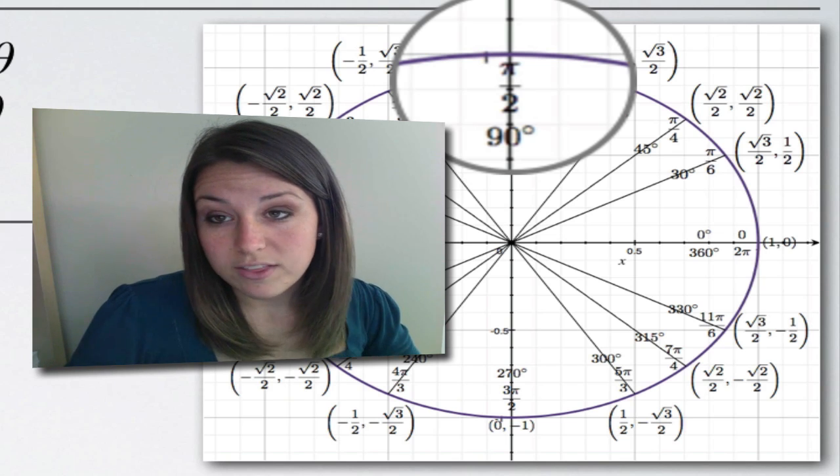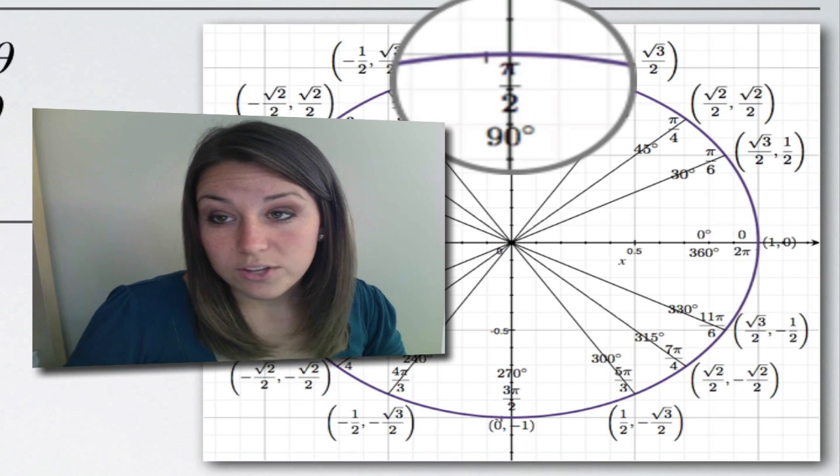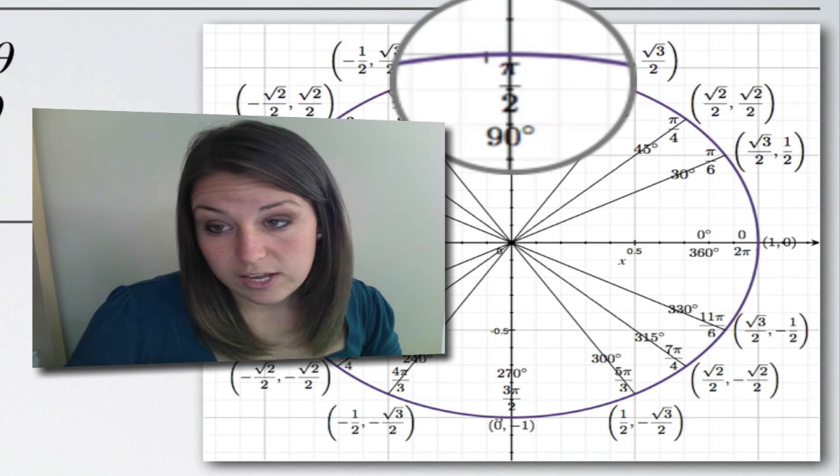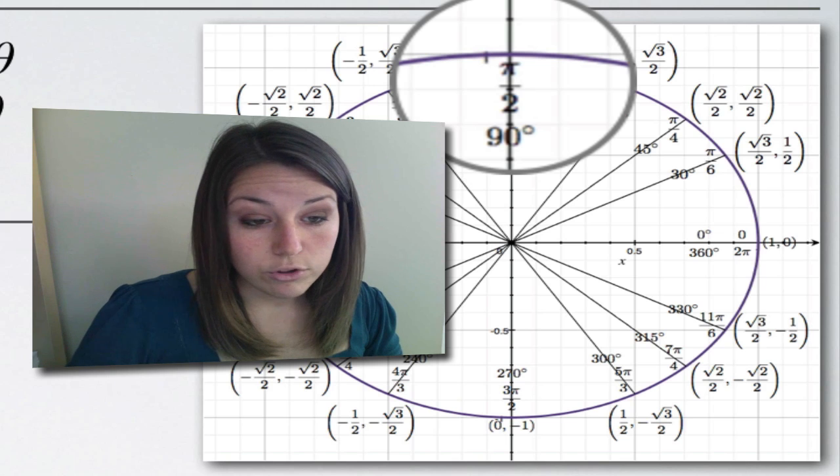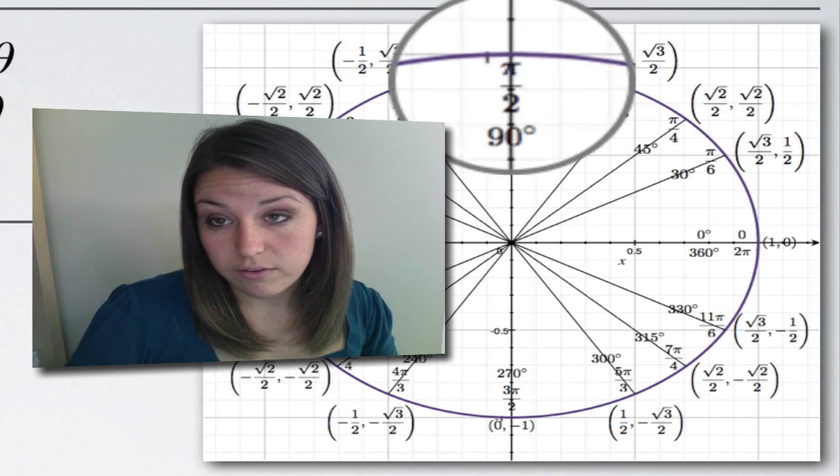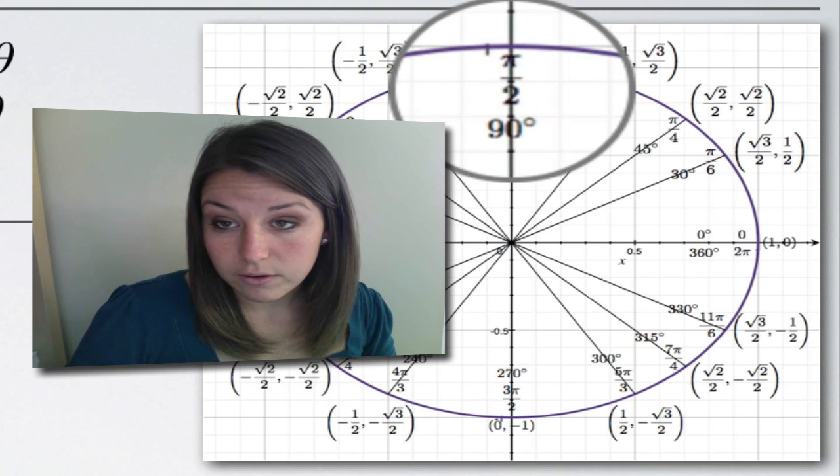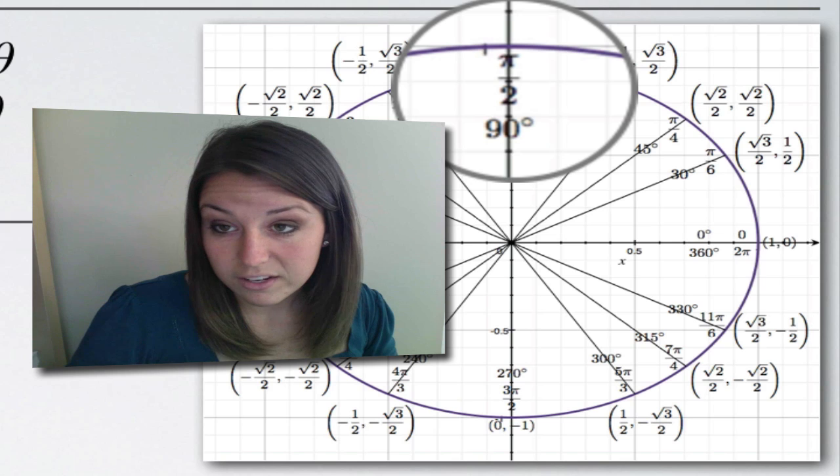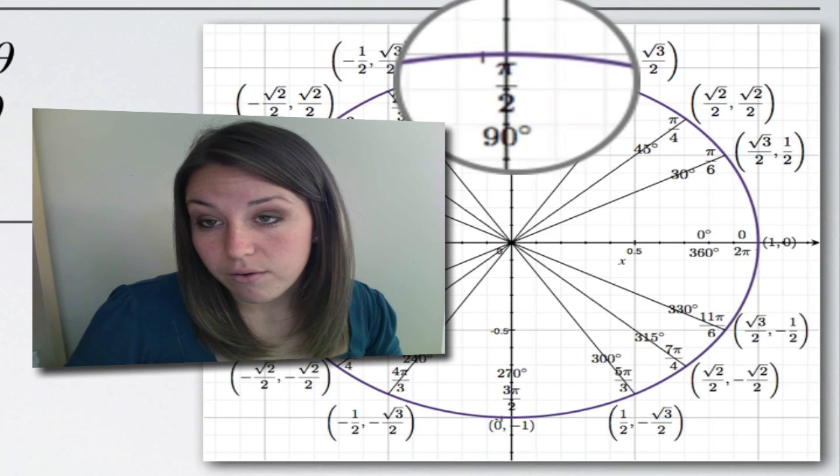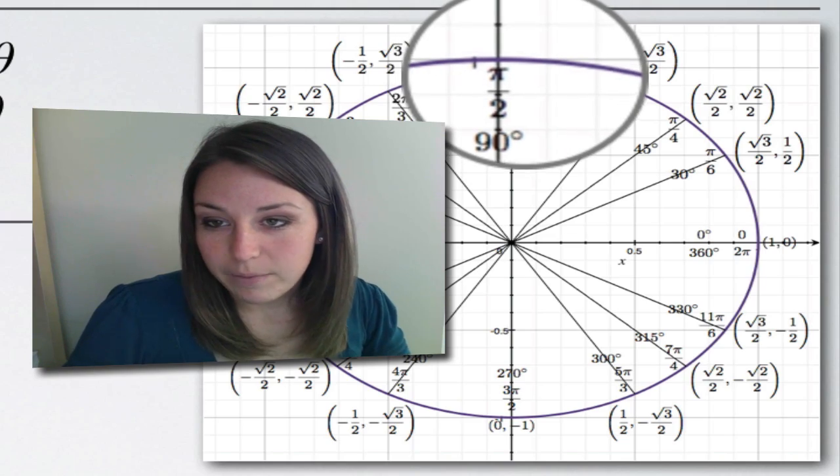So whenever we're using the unit circle, if we're looking for cosine of an angle, we're looking at the x-coordinate at that point, which here is 0. If we're looking at sine of the angle, we're looking at the y-coordinate, which here is 1. So cosine of pi over 2 is 0 and sine of pi over 2 is going to be 1.